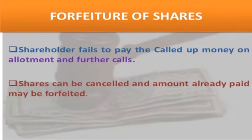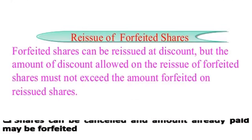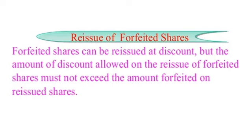Forfeiture of shares: when shareholders fail to pay the call-up money on allotment and further calls, shares can be cancelled and the amount already paid may be forfeited. The name of the shareholder is removed from the register of members. The amount already received on these forfeited shares is transferred to the newly opened share forfeiture account. Reissue of forfeited shares: forfeited shares can be reissued at a discount, but the amount of discount allowed on the reissue of forfeited shares must not exceed the amount forfeited on the reissued shares.